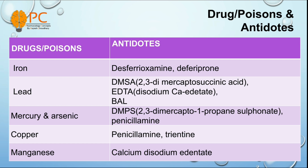And for mercury and arsenic poisoning, we can use DMPS, means 2,3-dimercapto-1-propane sulfonate, as antidote. We can also use penicillamine for mercury and arsenic poisoning. For copper poisoning, we can use penicillamine and trientine as antidote. And for magnesium poisoning, we can use calcium disodium edetate as antidote.